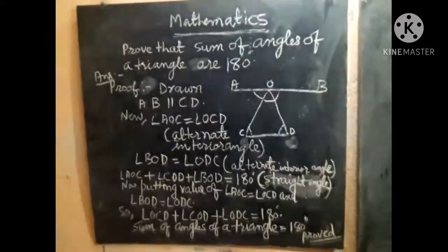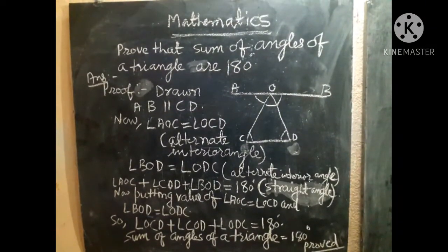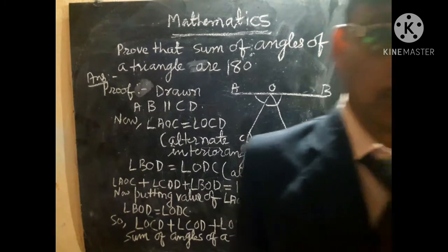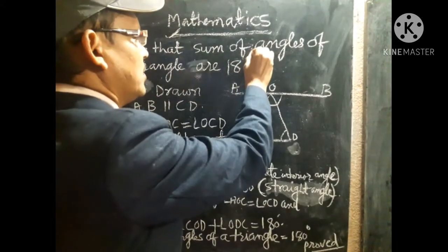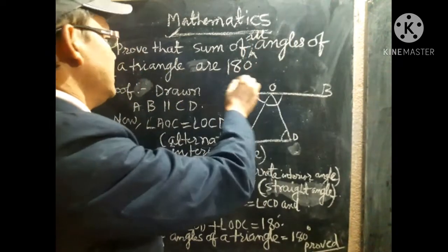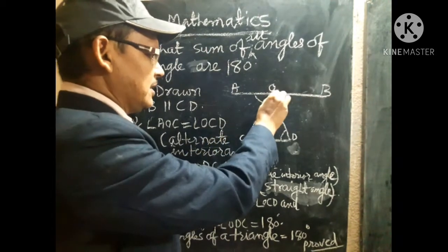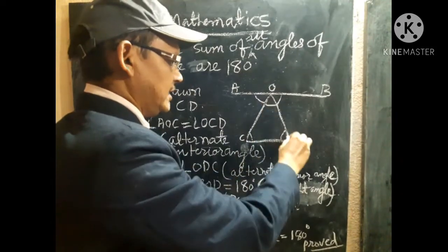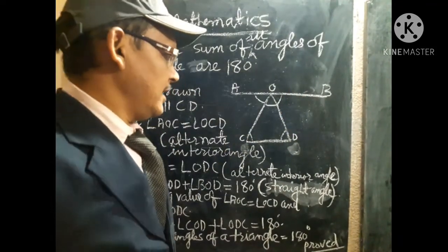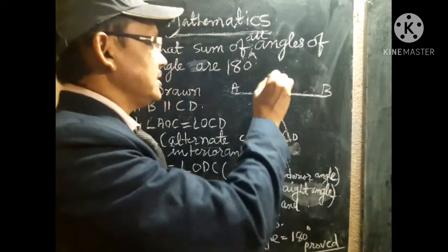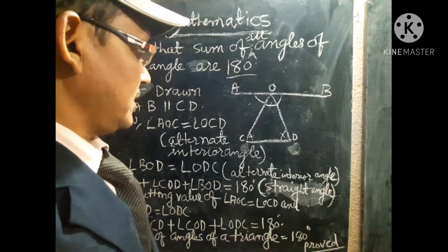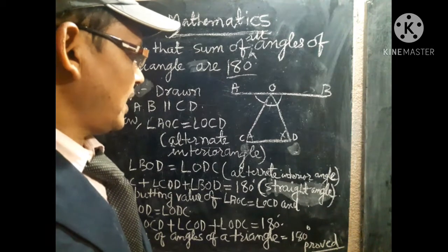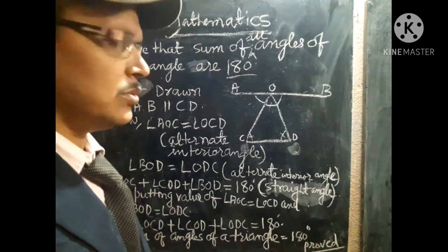Try to understand all the things given here. In this video I want to show and prove that the sum of all angles of a triangle are 180 degrees. Here you are observing triangle OCD, and the sum of all its angles is equal to 180 degrees. I have proved this through two methods.